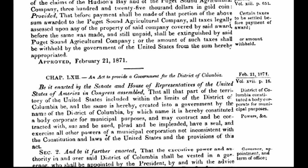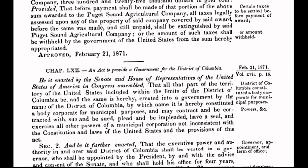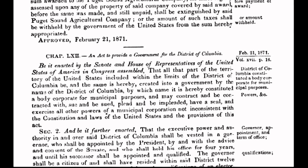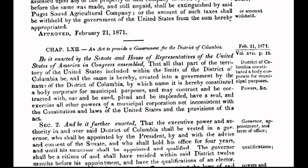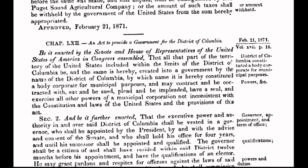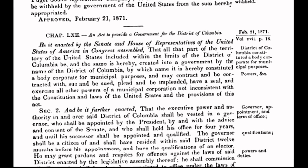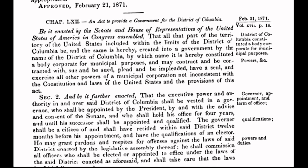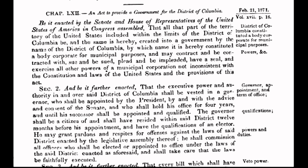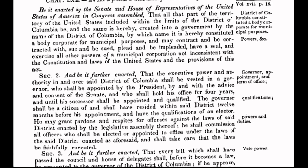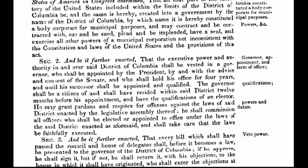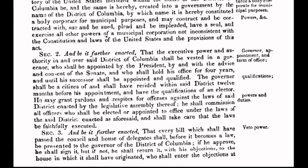Congress cut a deal with the international bankers, specifically the Rothschilds of London, to incur a debt to said bankers. Because the bankers were not about to lend money to a floundering nation without serious stipulations, they devised a way to get their foot in the door of the United States. The Act of 1871 formed the corporation called the United States — all in capital letters. The corporation, owned by foreign interests, moved in and shoved the original constitution into a dustbin.